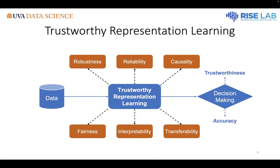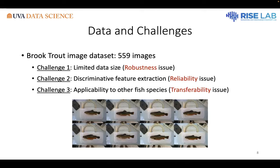For certain applications, we want to highlight several properties. Let me go over the fish identification problem and see how we can leverage trustworthy representation learning to achieve that goal. We have a specific dataset from the bluechart fish, with images captured in Maryland by our collaborators from USGS. We only have 559 images in the dataset — it's not a large one — so our first challenge is limited data. If we don't have a large dataset for model training, the model itself will likely not be robust.